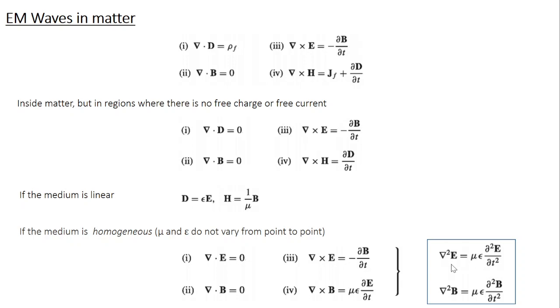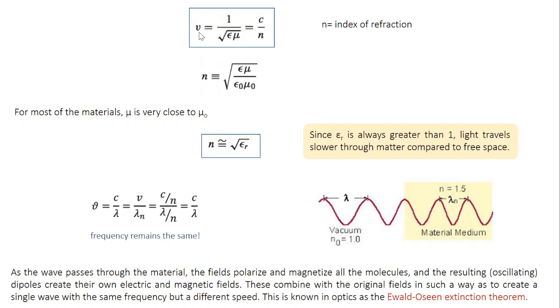This looks very similar to the three-dimensional wave equation. So in place of 1 over V square, you have mu epsilon, which means you can write the velocity of electromagnetic wave in matter V equal to 1 over square root of epsilon mu. Or in terms of the velocity in free space C, you can write V equal to C by N.